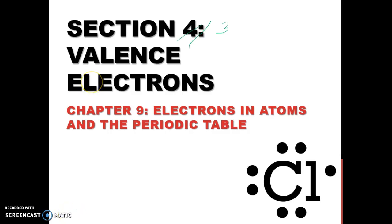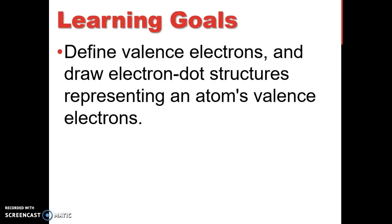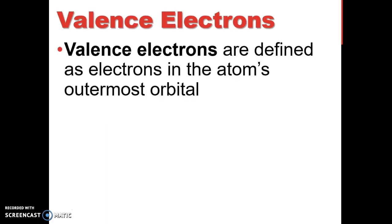All right guys, this is valence electrons and Lewis structures. We did this in class, but if you were not in class you can catch up by watching this video. Learning goals: define valence electrons and draw electron dot structures, also called Lewis dot structures. Write that down. The reason we do these is because it represents an atom's valence electrons.